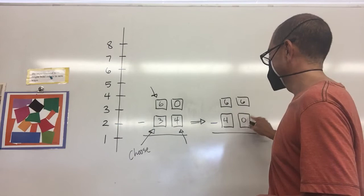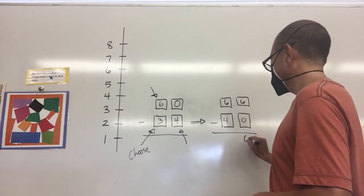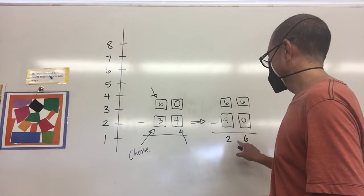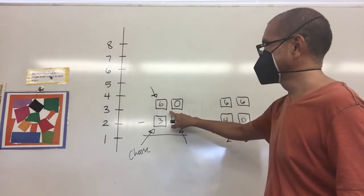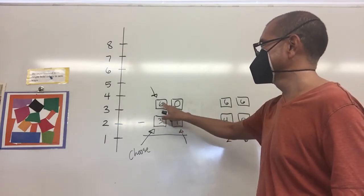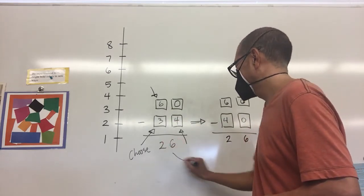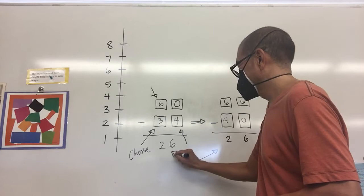Well six minus zero is easy to do, that's six. Six minus four is easy to do, that's two, so I get 26. Over here if you had to borrow and rename you should also get 26 and these two numbers are the same.